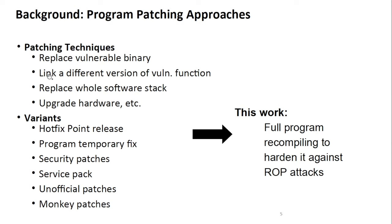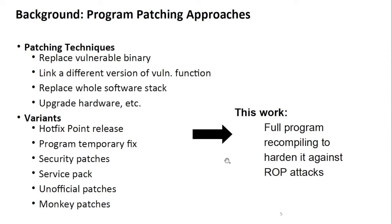As we can see here, we have all kinds of patching techniques — from replacing the vulnerable binary, to linking a different version of a vulnerable function, replacing the whole software stack, upgrading hardware, hotfix, point release, program temporary fix, security patches, service pack, unofficial patches, and monkey patches. In this work, we will be concerned about full program recompiling in order to harden the program against code reuse attacks.